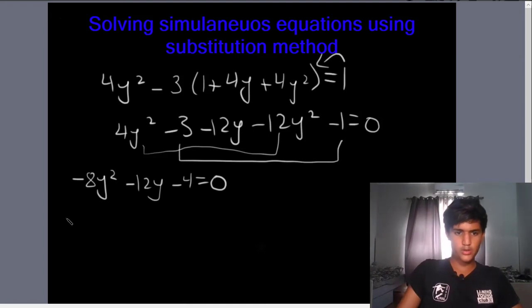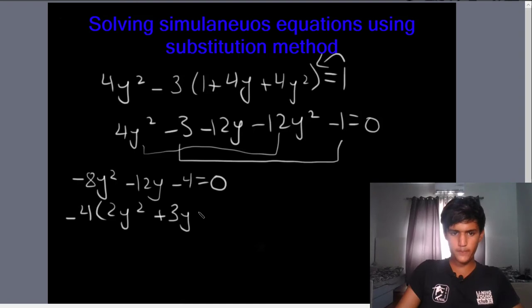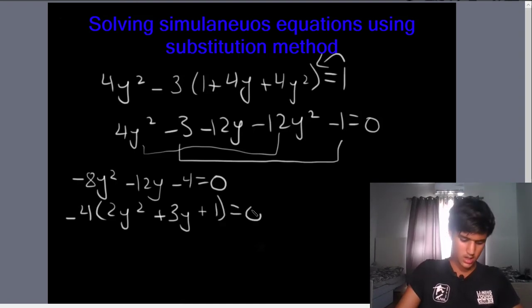We are going to take minus 4 as a common factor. Dividing through by minus 4, we get 2y squared plus 3y plus 1 is equal to 0.